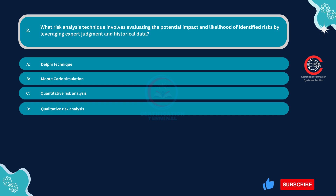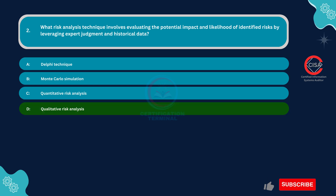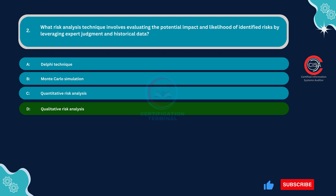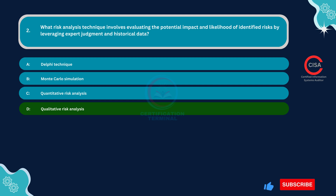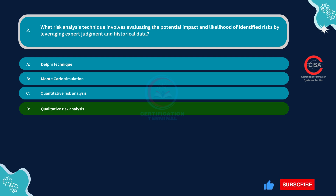The correct answer is Option D — qualitative risk analysis. This technique involves assessing risks based on subjective criteria such as expert judgment and historical data. It doesn't involve precise numerical values but rather uses qualitative descriptors like low, medium, or high to evaluate the likelihood and impact of risks. Expert judgment is essential in this method to gauge the relative significance of risks and their potential consequences based on experience and knowledge.